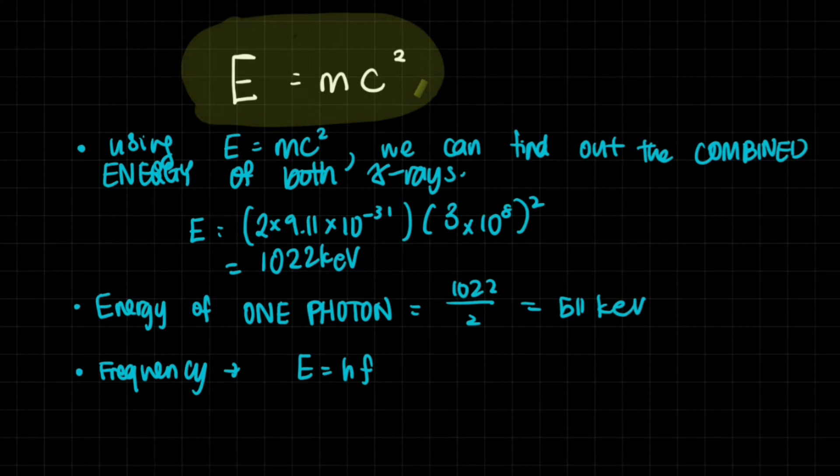So as we all know, E equals mc squared. Now that we know that, we can actually find out the energy of the photons. Using E equals mc squared, we can find out the combined energy of both gamma rays. Remember that this is the combined energy. There are two gamma rays. The energy is the mass combined, which means two times the mass of an electron, because they have the same mass. Then you take the speed of light, square it, and you get this. That's the energy of the total photons.